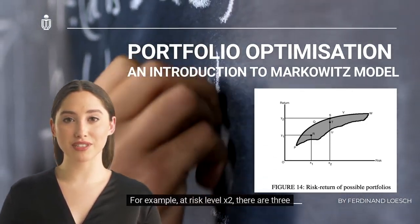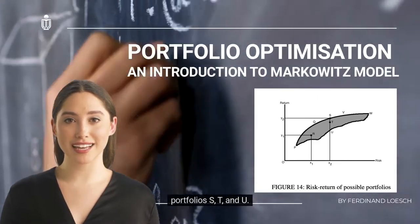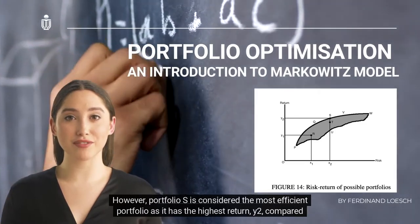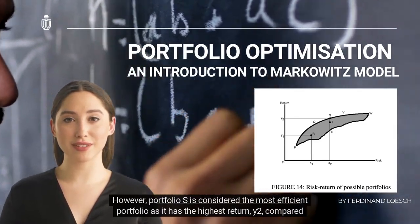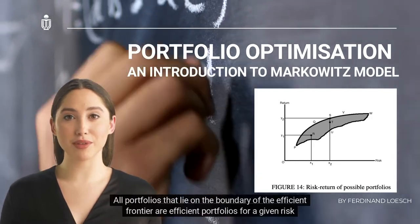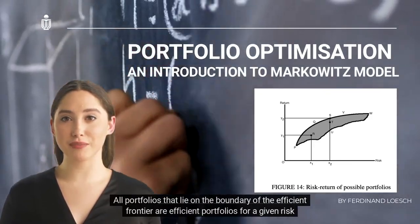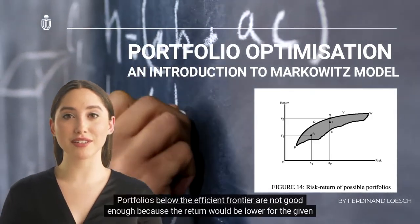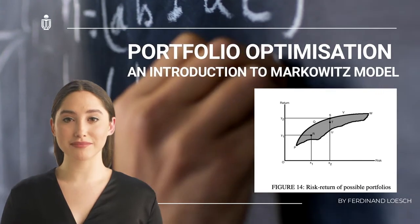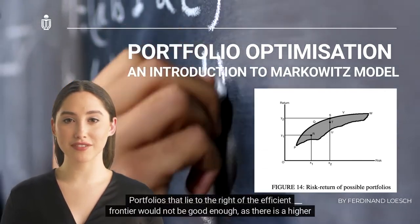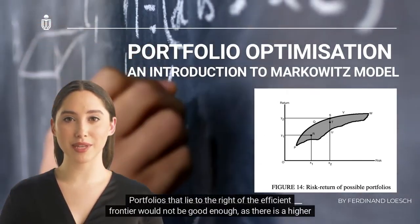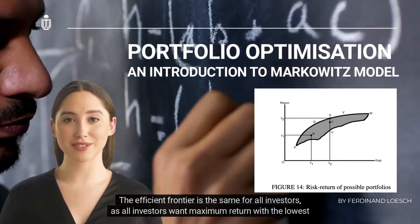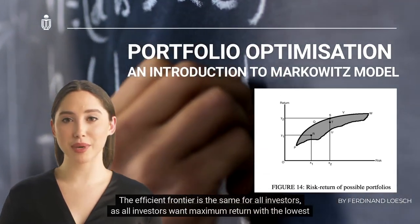From portfolios with the same return, an investor will prefer the one with lower risk; from portfolios with the same risk level, an investor will prefer higher return. As investors are rational, they seek to maximize return while minimizing risk. The efficient frontier is the boundary of all possible securities an investor can invest in; portfolios on this boundary are considered efficient. For example, at risk level X2 there are three portfolios S, T, and U, but portfolio S is most efficient as it has the highest return Y2. Portfolios below or to the right of the efficient frontier are not optimal.